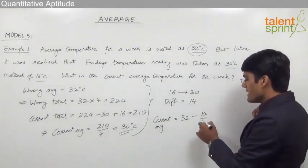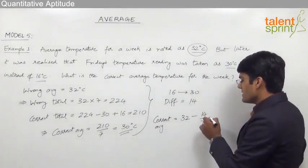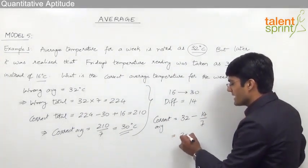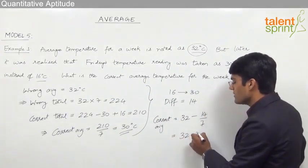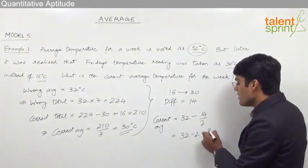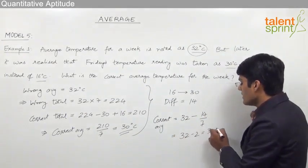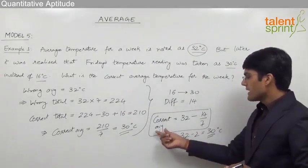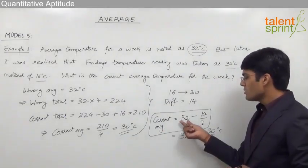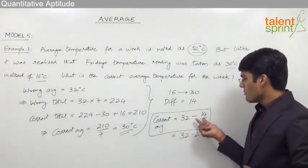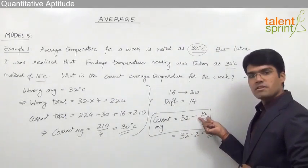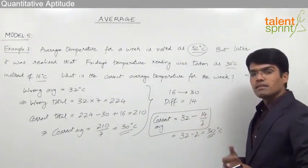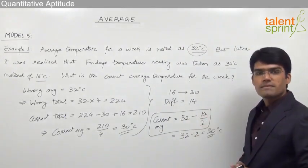14 divided by 7 equals 2. So the correct average is 32 minus 2, which equals 30 degrees centigrade. The formula is: correct average = wrong average minus the difference of the values divided by the number of elements.